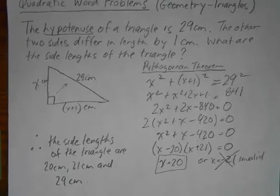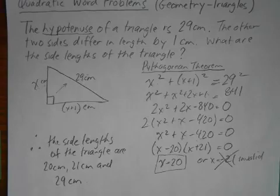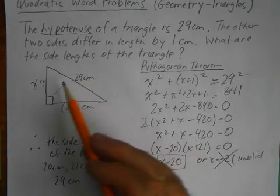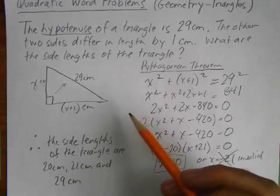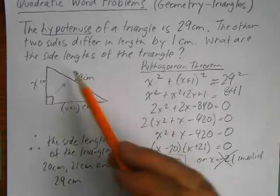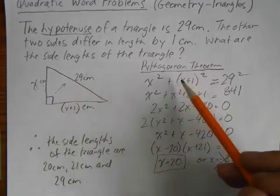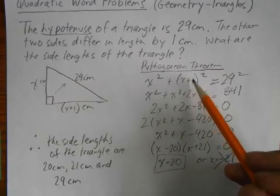So that one was pretty quick. But again, the important thing, the key thing is to draw the picture, find the relationship that will allow you to make an equation. And it has to be a quadratic equation.